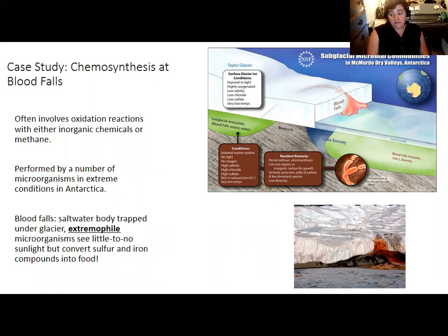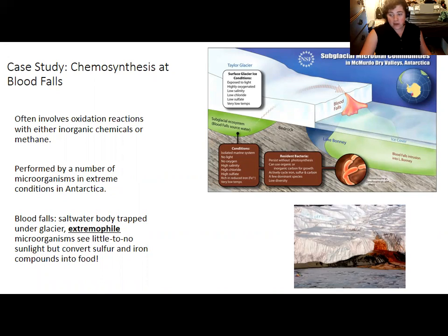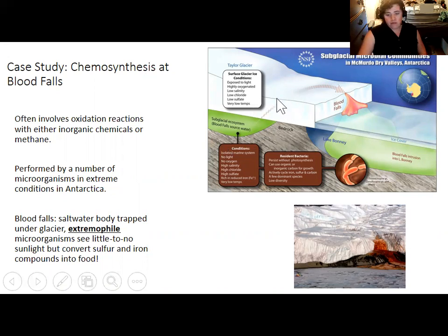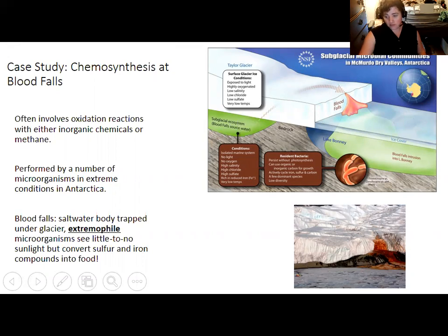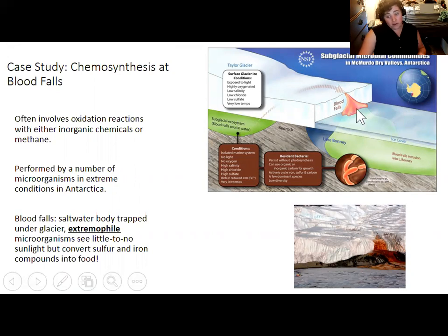Speaking of proper extremophiles and microorganisms, one extremely interesting example is Blood Falls, where microorganisms live in a lake that has little oxygen. They perform oxidation reactions with inorganic chemicals — including the iron in the rock underneath the lake — in order to obtain food. Lake Bonnie receives very little sunlight because it's covered by a thick glacier, and the water has very little oxygen. Nonetheless, the microorganisms survive by performing these inorganic chemical reactions — sulfur and iron are converted to food — and in the process they produce oxidized iron. At the one point of outflow you get a stream of blood-red water colored by this oxidized iron, and it really seriously does look like blood.